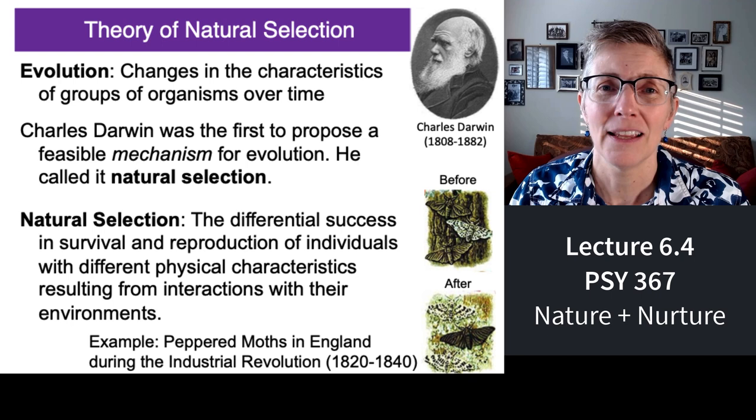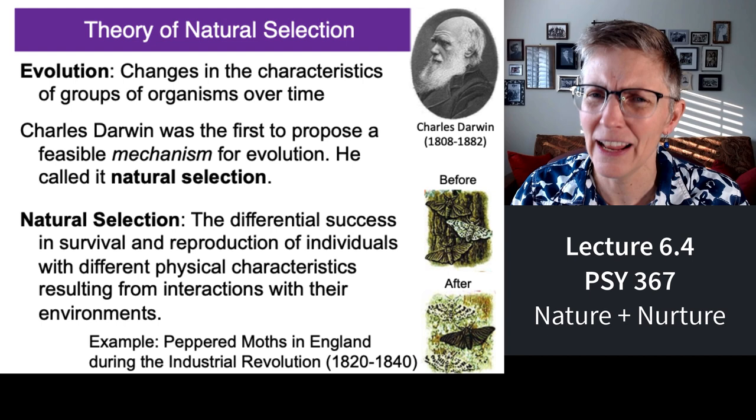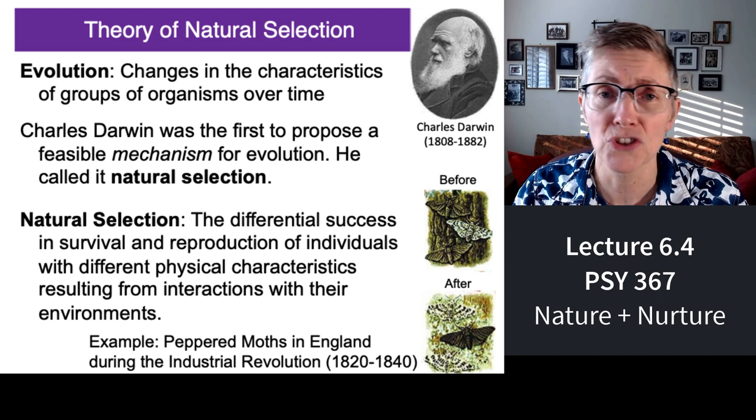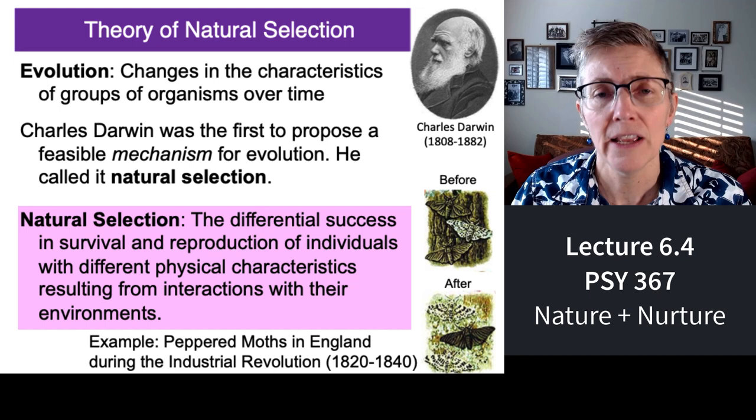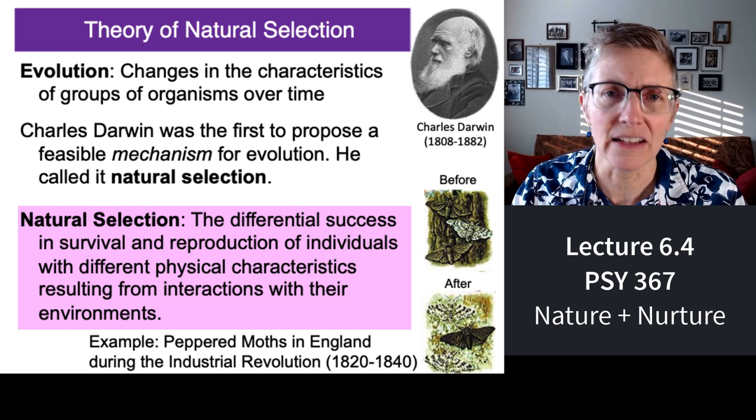Evolution was known about long before Charles Darwin, but there wasn't a mechanism by which evolution could happen — that hadn't been proposed. So the idea that organisms and animals change over time, that wasn't a problem. But how did they change over time? Darwin's brilliance was in proposing natural selection, which means that nature essentially selects some traits over others.